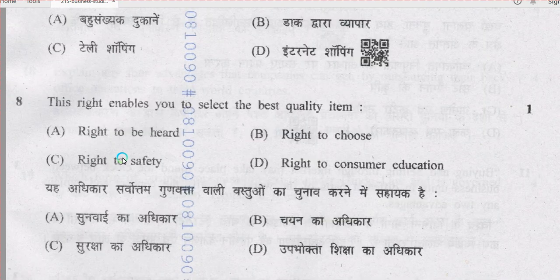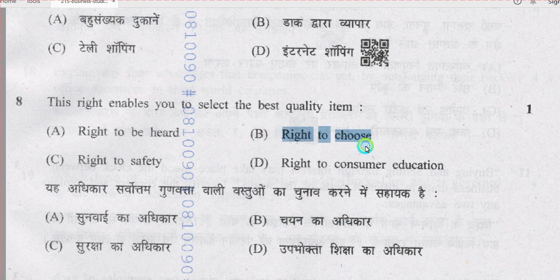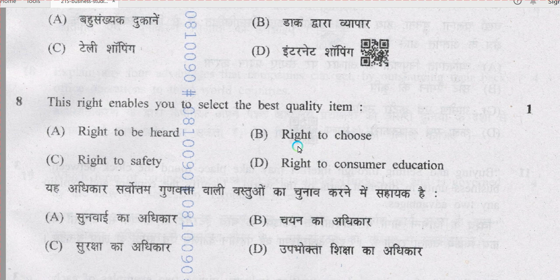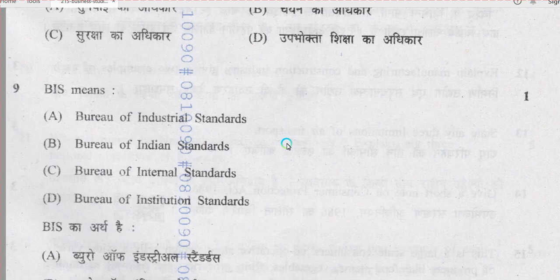Question number 8: this right enables you to select the best quality item. The correct option is B, right to choose, because as per this right you have the choice to select the best product suitable for yourself. Question number 9: BIS means — BIS stands for option B, Bureau of Indian Standards.